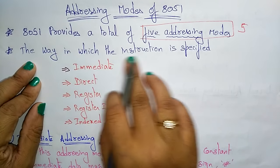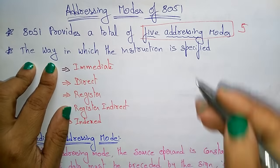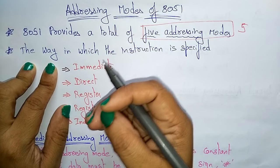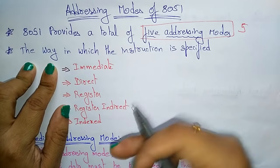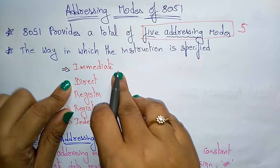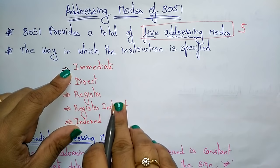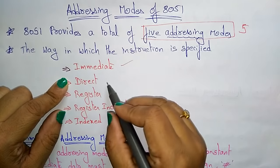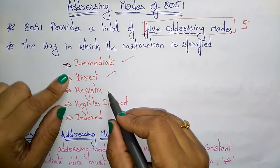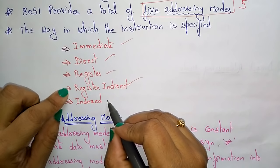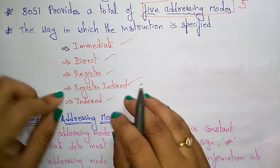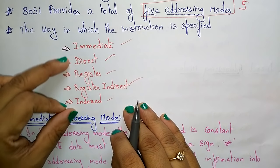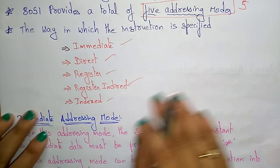The way in which the instruction is specified — whatever the instruction that we are writing in assembly language code — can be specified by using five addressing modes: immediate, direct, register, register indirect, and index. So only five addressing modes. Now let us see each addressing mode clearly.